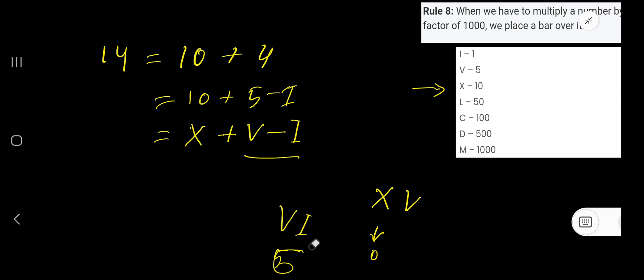That is 5 plus 1 equals 6. Totally this will be 6, but we need 4. So we have to use here this, so this means 5 minus 1. That is, if you place low value symbol before the high value symbol, then you have to apply subtraction.